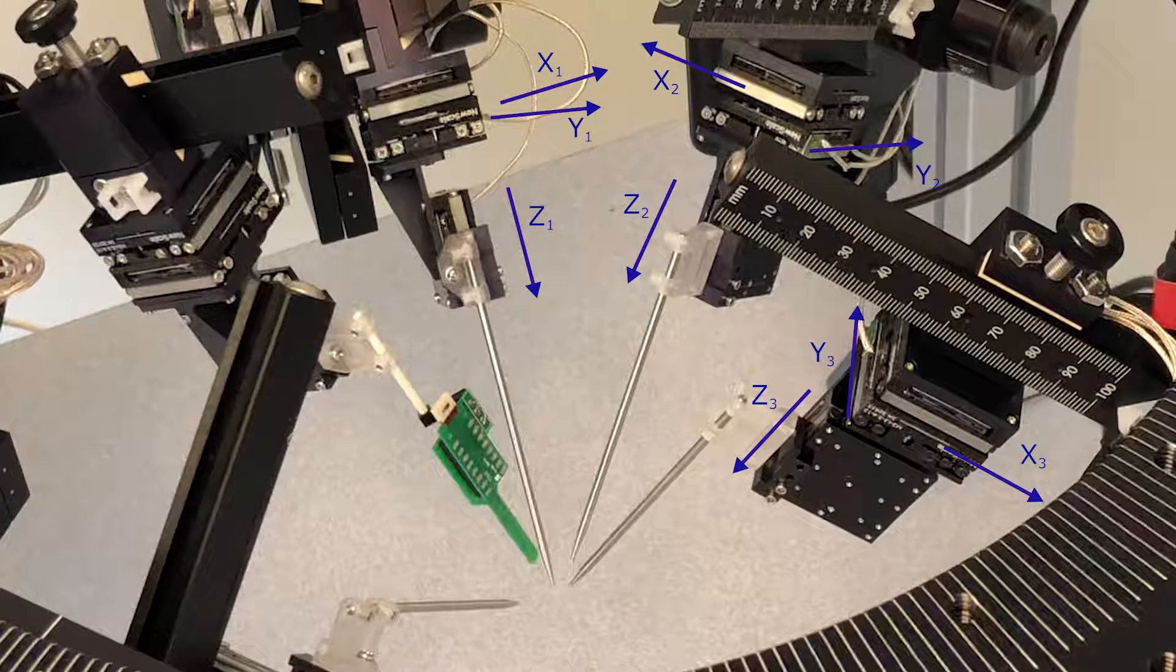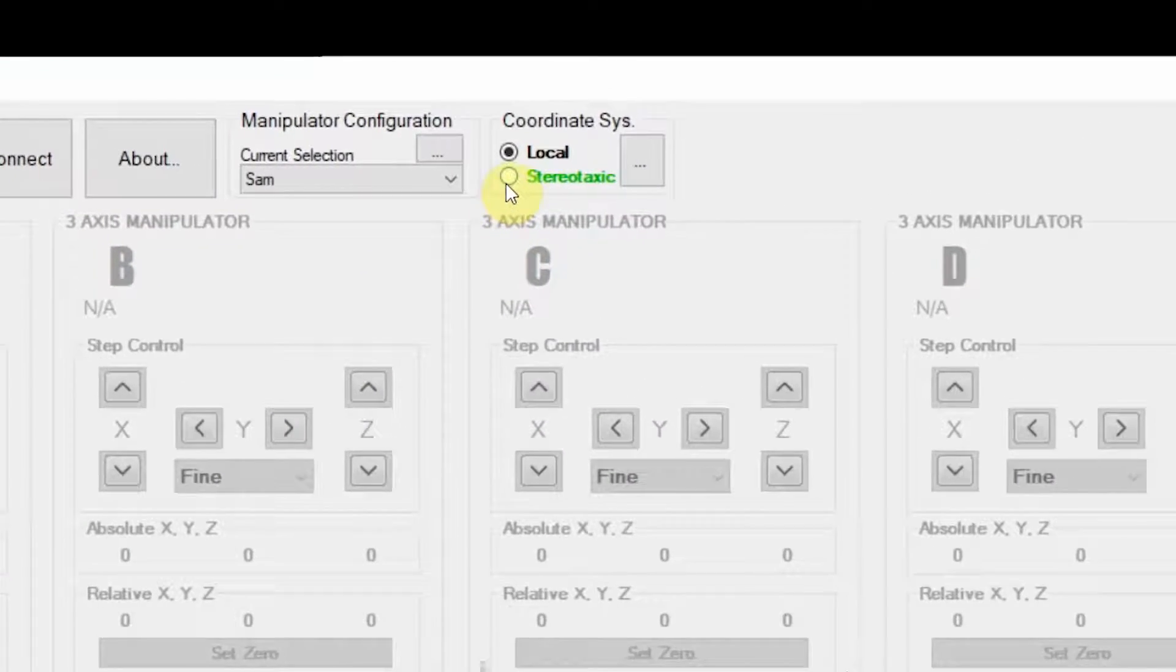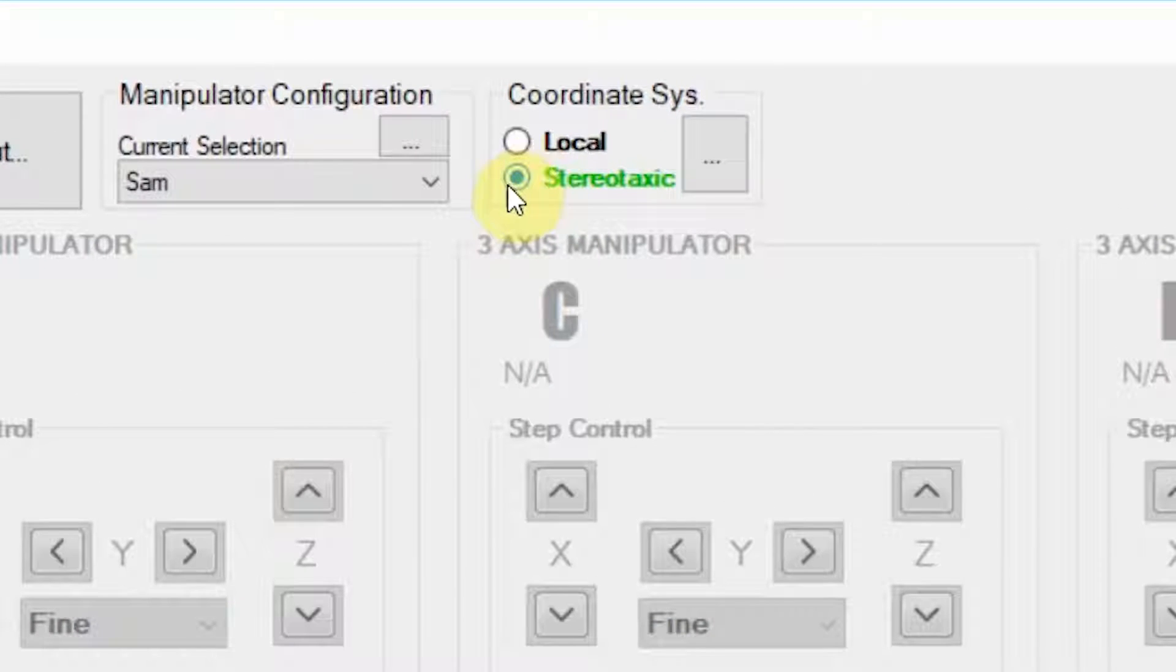When the virtual coordinate system is not active, each manipulator moves in its own set of orthogonal X, Y, and Z axes. When VCS is activated, the software interface will change to green.